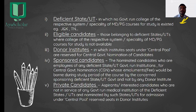These are some key points to note. First is 'deficient state or union territory' — one in which no government run college of the respective system or specialty of MD or PG courses for study is existing.